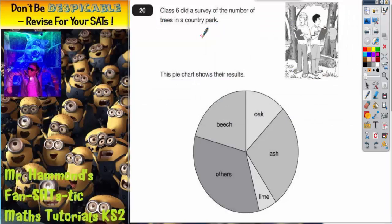Question 20 is about a pie chart. Class 6 did a survey of the number of trees in a country park and you can see them in this picture carrying out a survey. This pie chart shows their results.